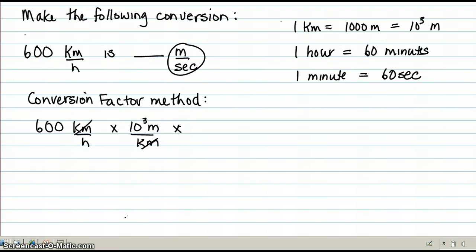Okay, now I need to get hours to minutes. So, I know that if I multiply by one hour and divide by 60 minutes, then my hour, which is on the bottom, will now cancel with my hour on the top. From minutes, I need to get to seconds, and I know that one minute is 60 seconds. So, my minute on the top will cancel with my minute on the bottom.